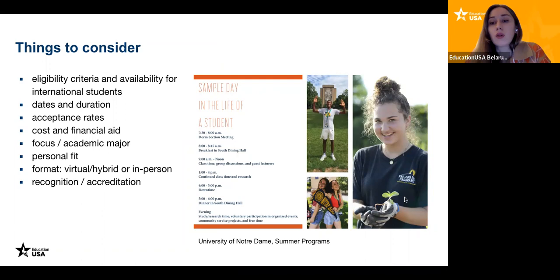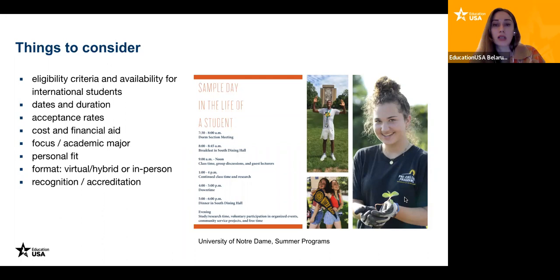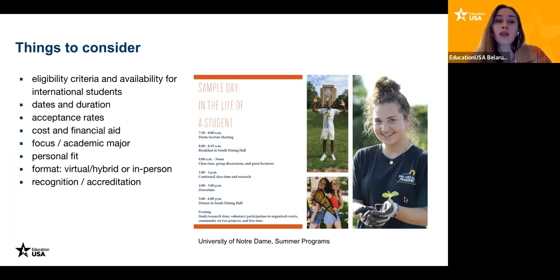Things that you need to consider: first of all, eligibility criteria. After you do your research, if you are a high school student who is 15 years old, make sure you check eligibility criteria so you can be sure you can apply based on your age and your country. Some programs accept international students but have restrictions that only students from specific countries can apply. Also make sure that those programs are available for international students, because a lot of great opportunities with good funding are only available to US citizens.